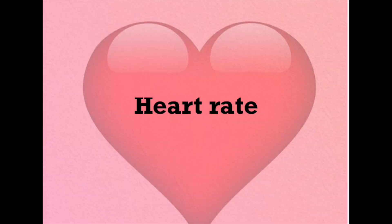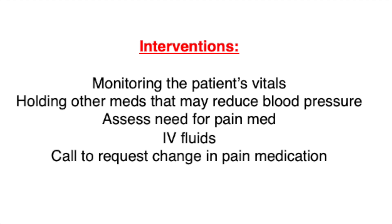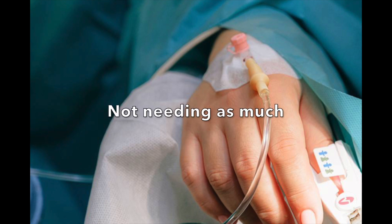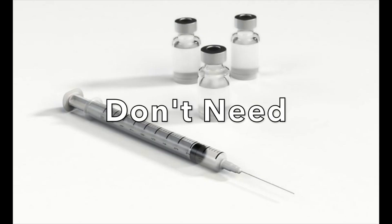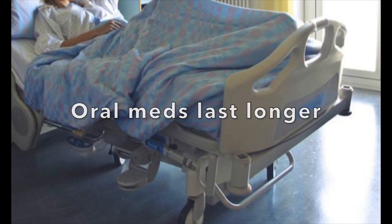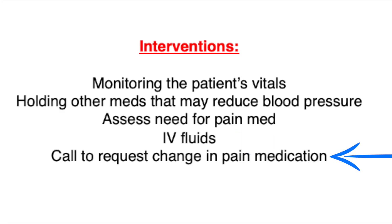Morphine is one pain medication often used post-op that can potentially decrease blood pressure, heart rate, and venous return. Interventions if blood pressure drops due to pain medications include: monitoring the patient's vitals, holding other medications that may reduce blood pressure, and reassessing the need for the pain medication. Sometimes the patient may not need IV pain medication and could benefit more from an oral medication. IV fluids are important, and calling the provider to request changes in the pain medication may also be warranted.